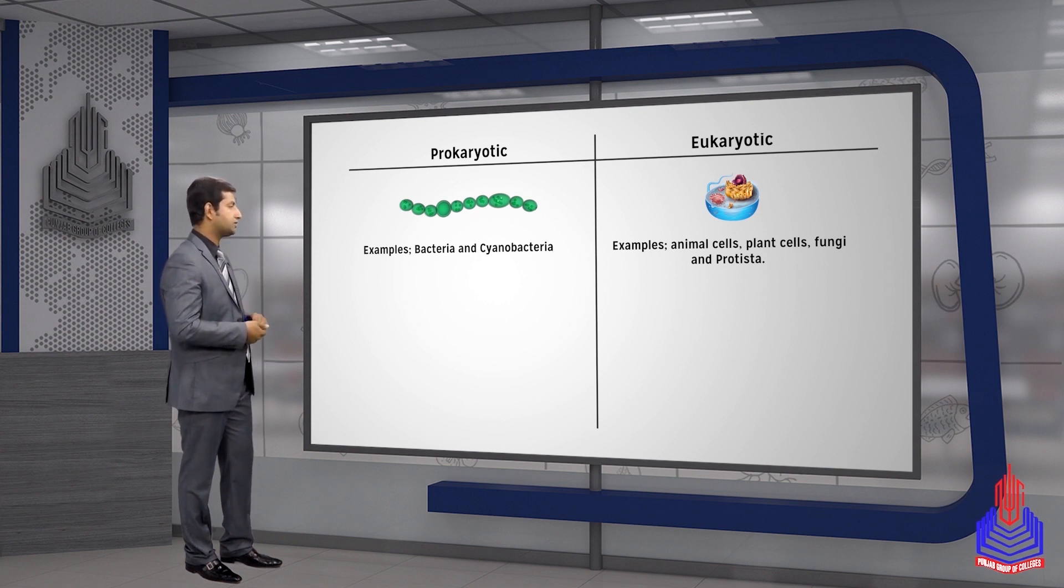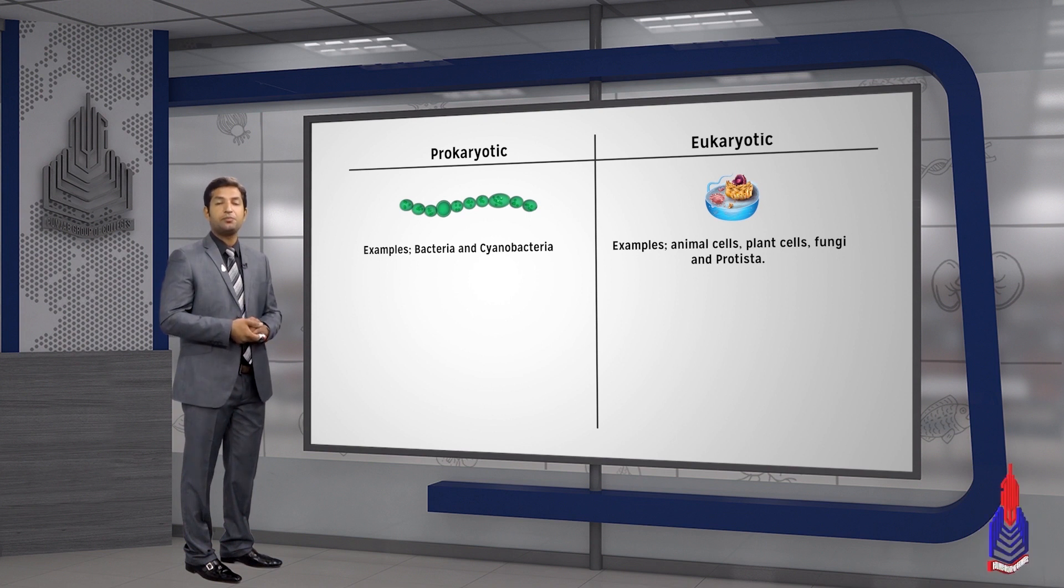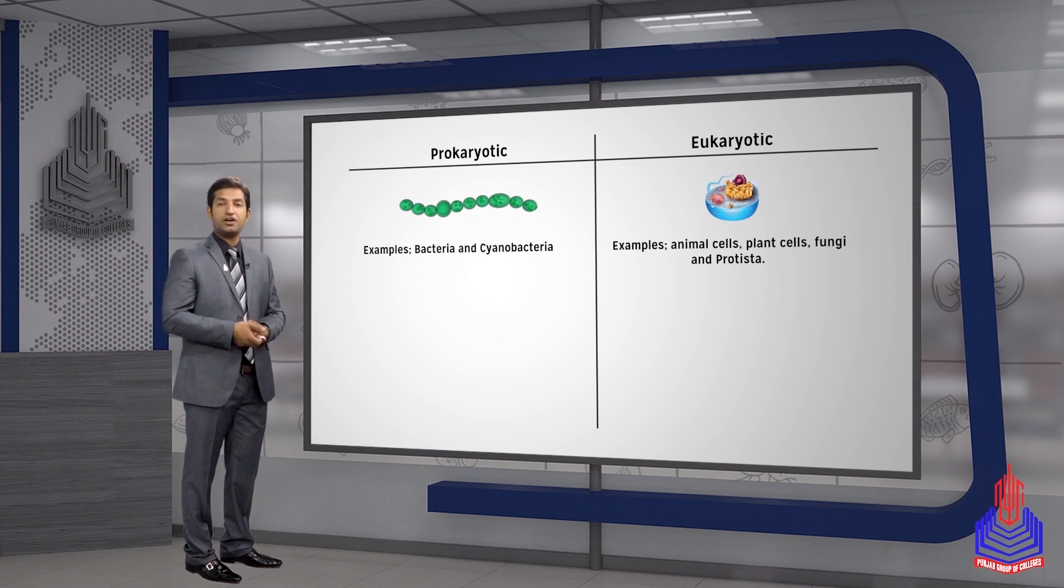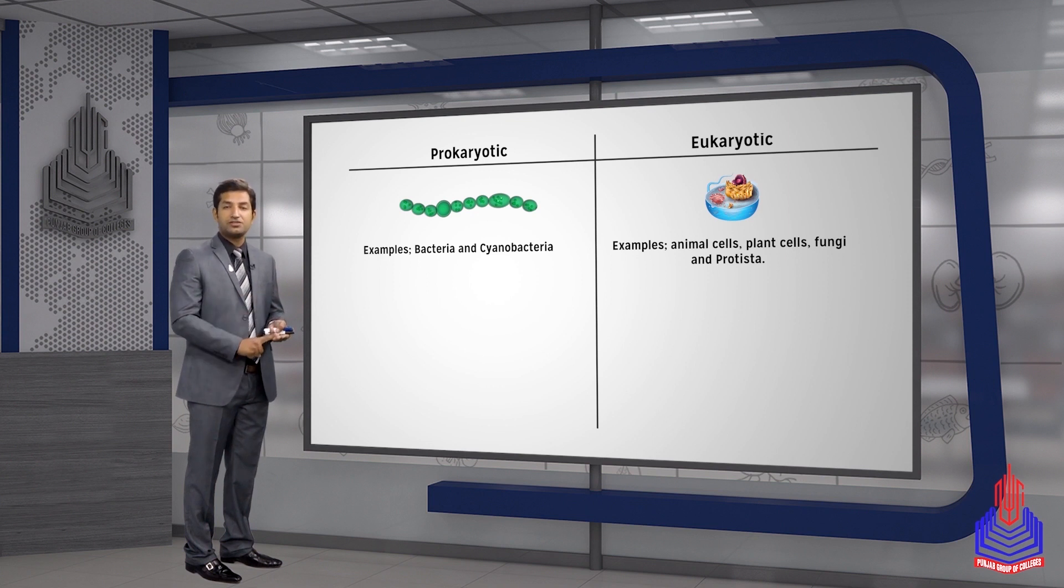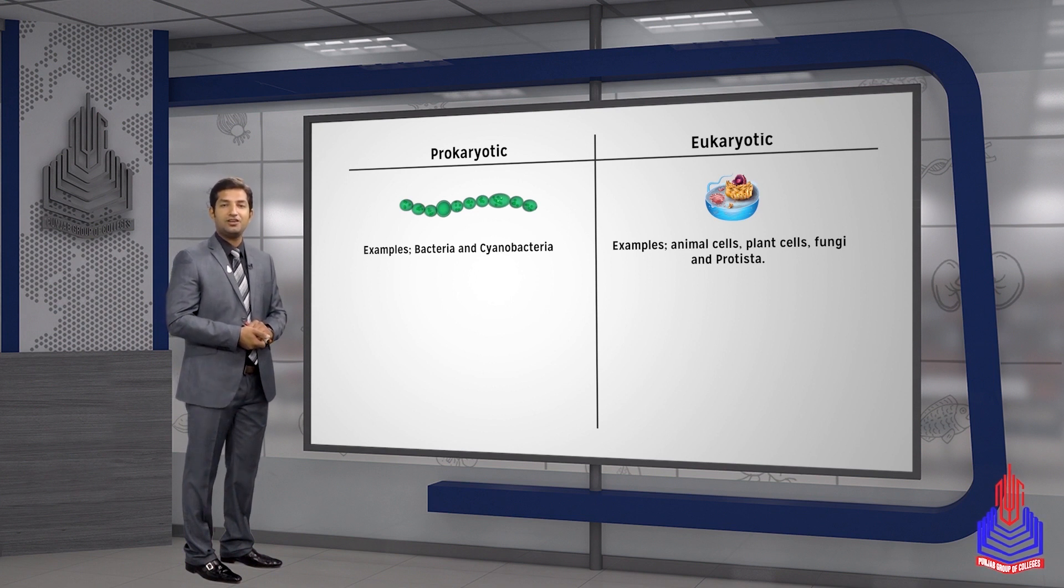Regarding size: prokaryotic cells are smaller than eukaryotic cells. Animal cells or plant cells are much larger than bacteria. In eukaryotes, we include animal cells, plant cells, fungal cells, and protists like amoeba and paramecium. In prokaryotic cells, we include bacteria and cyanobacteria, also known as blue-green algae.